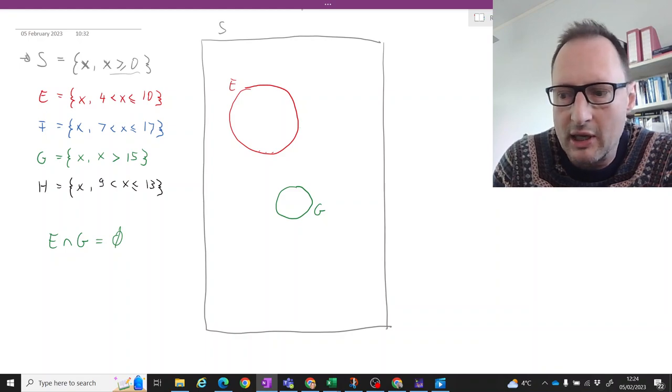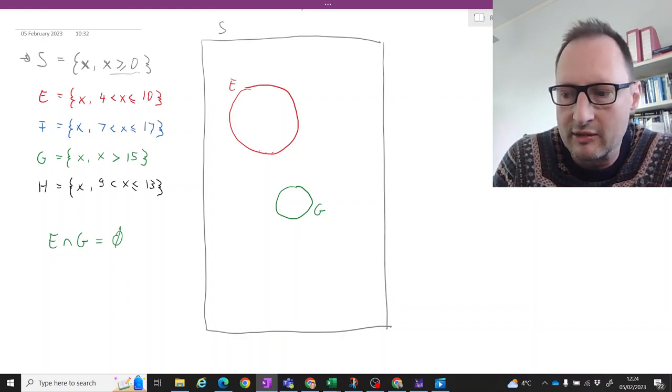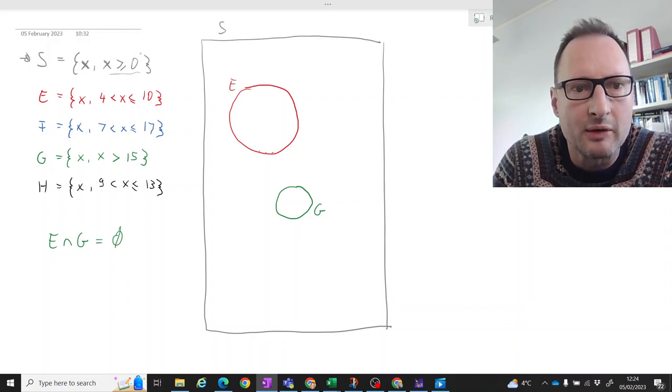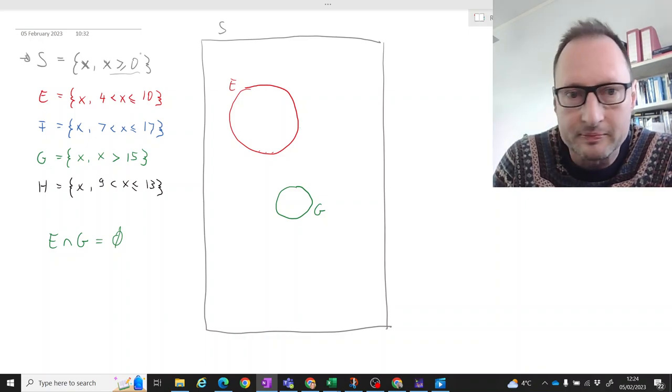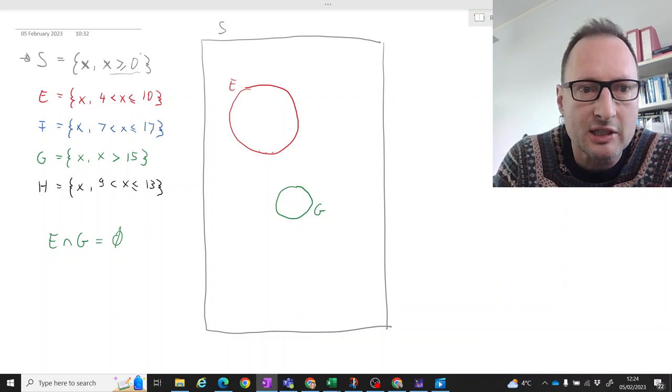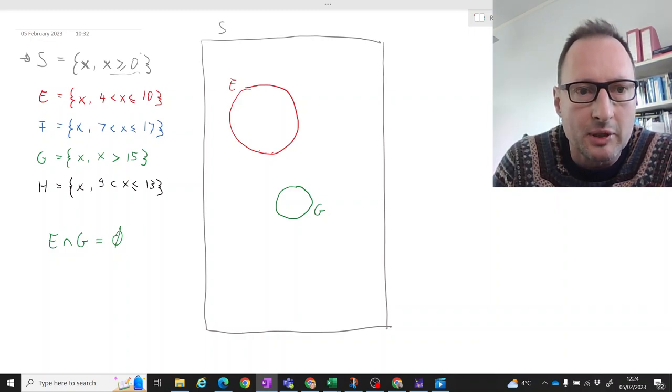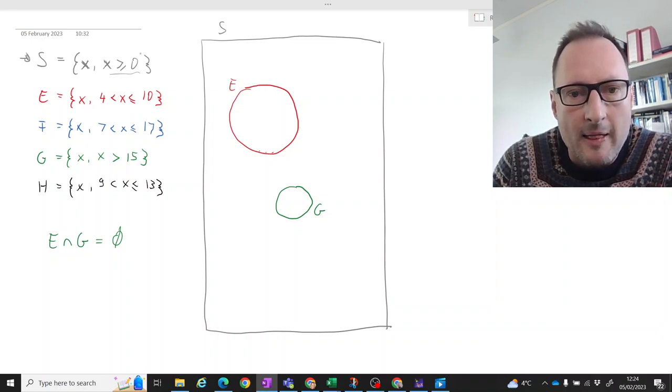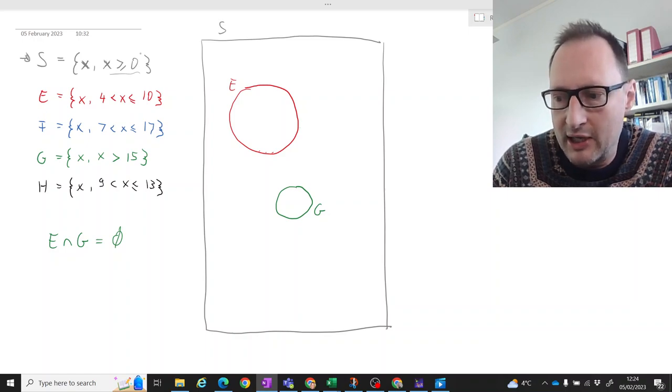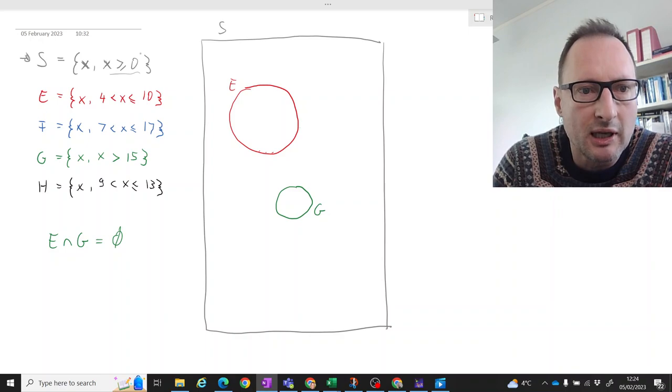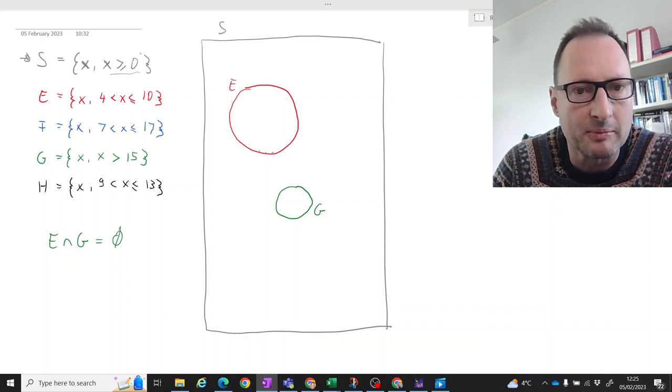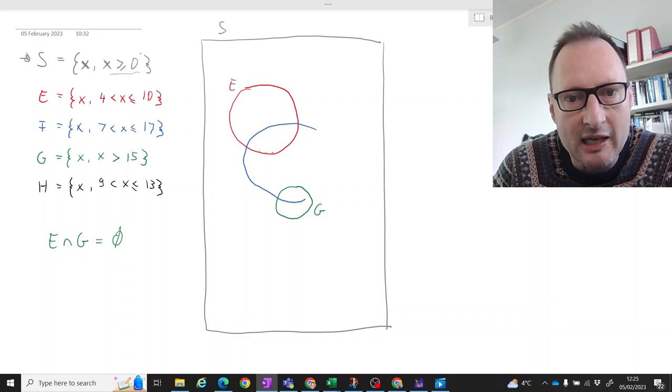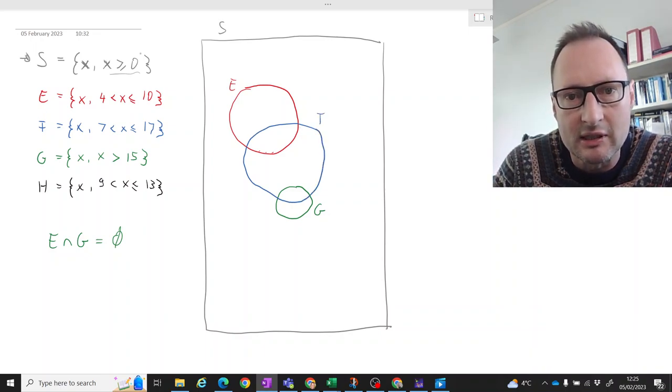So let's also think of event, let's draw event F. So that is blue. So let's think about how we would want to draw that. So F has an intersection with E. Because a value, for instance, we had discussed that before, of 8 contains both. So let's draw F. And how does F relate to G? Well, F goes all the way up to 17 and G starts from 15, or just above 15. So F has an intersection with both E and G. So here we have F.